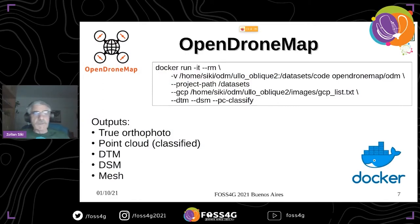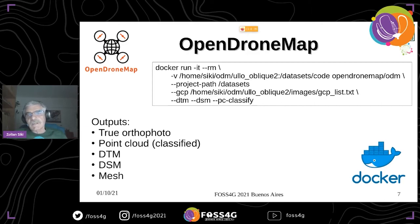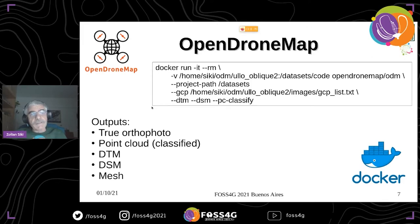OpenDroneMap is a quite new open-source development. It was started in 2014 and it is the de facto standard open-source drone image processing tool. It is recommended to use in a Docker container and it has only a command line interface. This is a sample of how to start processing drone images. It may create several different outputs: orthophotos, point clouds, digital terrain models, digital surface models, and mesh object models.